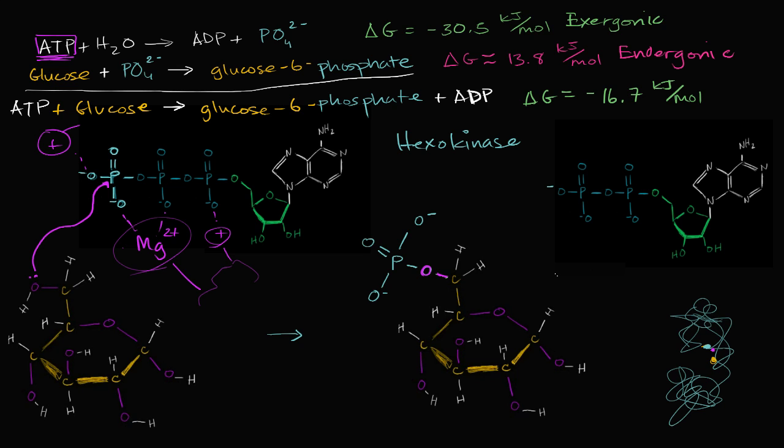And so this bond right over here, between this oxygen and this phosphorus, that is going to be this bond right over here. And as this happens, then this character, then these two electrons can be taken by this character.